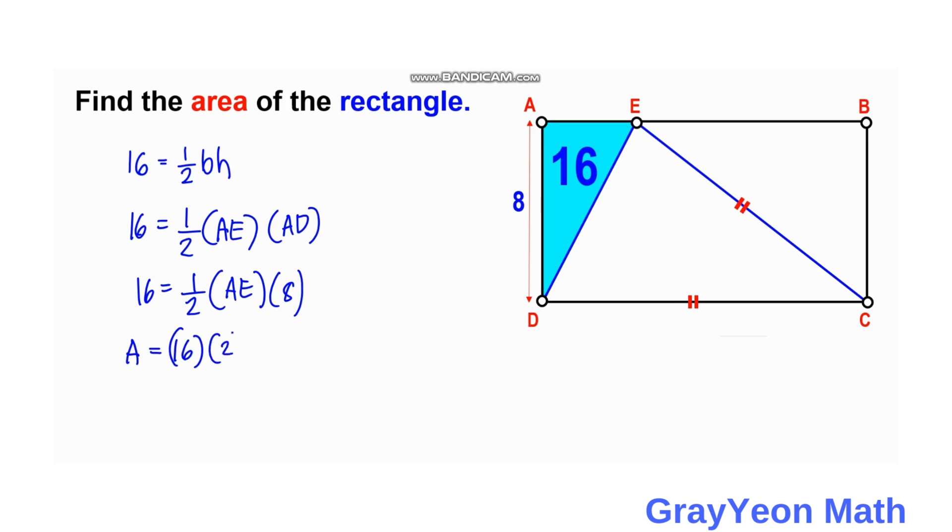AE equals 16 times 2 all over 8. We cross multiply, so this becomes 16 over 8 which is 2, so AE is 2 times 2 or 4.